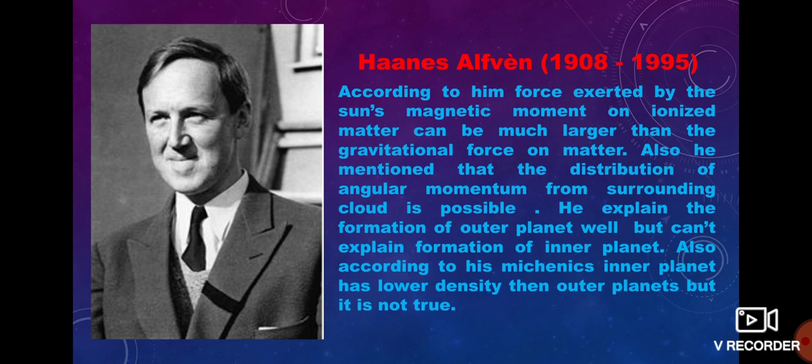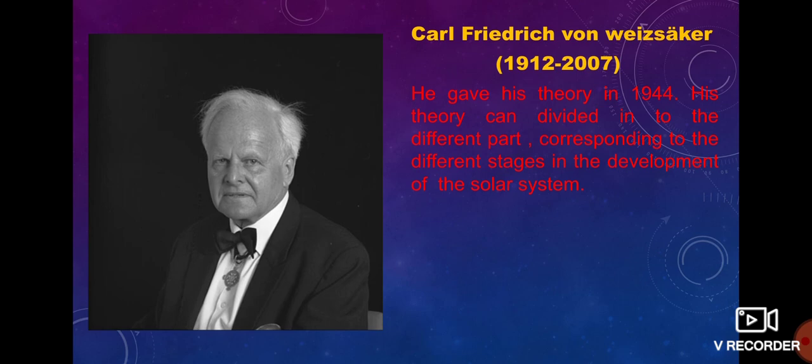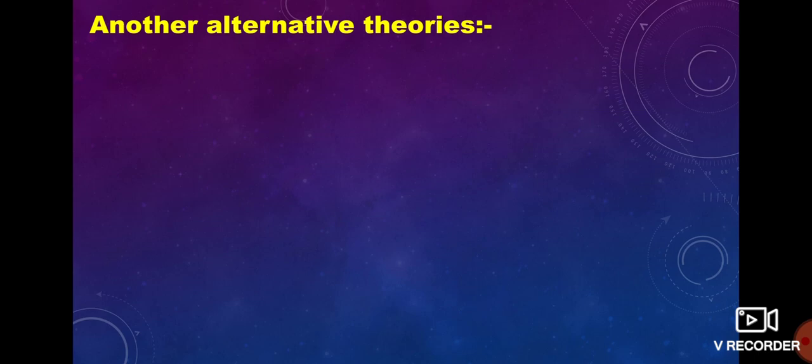After Alfvén, Carl Friedrich von Weizsäcker gave his theory in 1944, known as the protoplanet theory. His theory can be divided into different parts corresponding to different stages in the development of the solar system: first, the formation of a gaseous disk around the Sun; second, the formation of the solar system from vortices in this disk; and third, the condensation process. There are many other alternative theories developed to overcome the drawbacks of previous theories.